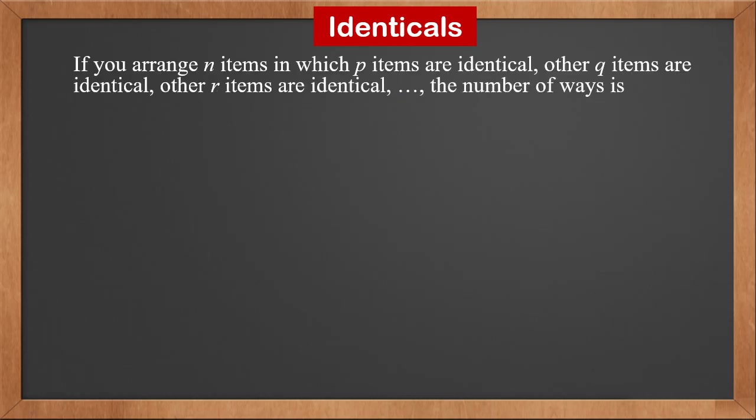If you arrange N items, in which P items are identical, Q other items are identical, R other items are identical, and so on, the number of ways to arrange them is N! divided by (P! × Q! × R! × ...).